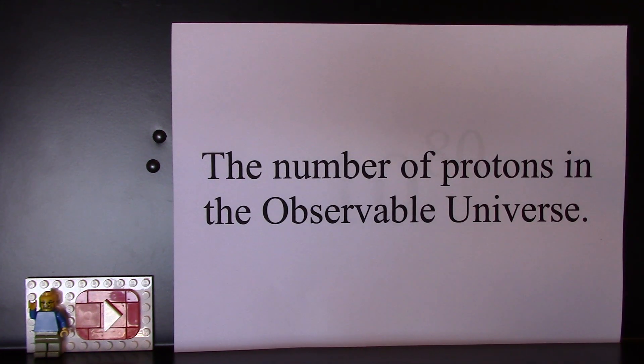And it is believed to be the number of protons in the observable universe. And since the charge evens out, it's also the number of electrons. The number of neutrons is slightly higher, but it's still in the same order of magnitude.